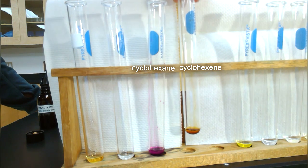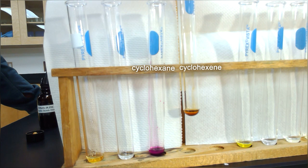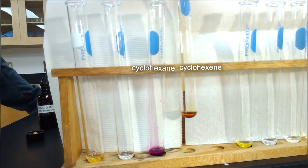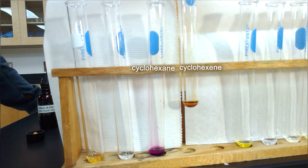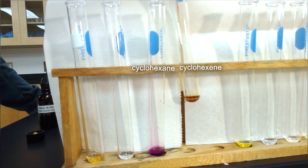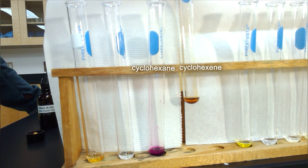The other test tube here did have a double bond present with the cyclohexene, so the potassium permanganate did attack that effectively, and formed a brown manganese dioxide precipitate, MnO2, and that gives it a brown color, and you can see there's a bit of a precipitate hanging around in there as well.